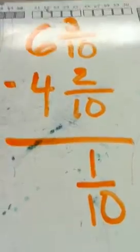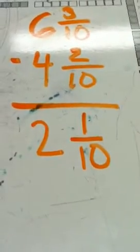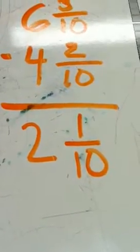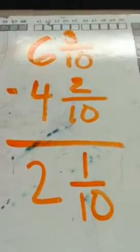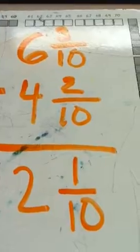So I have one tenth. Now I'm going to do my whole number. So I have six minus four is two. So I have two and one tenth. That's my answer. Now that's a pretty straightforward and simple subtraction problem with mixed numbers.